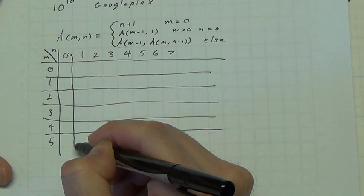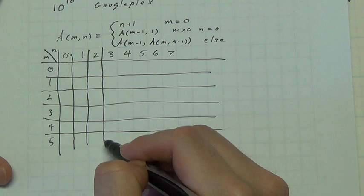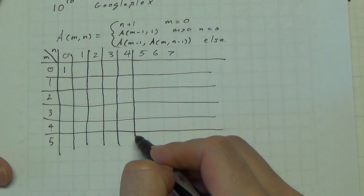Now, what is the Ackermann function when we have 0, 0 input? Well, m is 0, so we use the first definition there, and so the Ackermann function gives out a 1. Well,